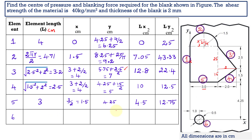The sixth entity is the circle. The element length is the perimeter of the circle, which is 2πR. The diameter of the circle is 0.5, so the radius is 0.25, and the perimeter is 1.57 centimeter. The X bar is directly given as 1 centimeter from the reference axis. The Y bar value is taken as 0 because it lies exactly on the reference line. The LX and LY values are then calculated.